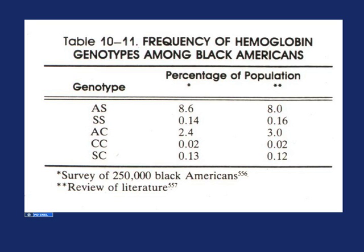The sickle cell allele is extremely common in Africa. In Americans of African descent, about 8% of the population are carriers of sickle cell anemia. That means about 4% of all hemoglobin beta alleles in this population are sickle and 96% are normal. Since you have two alleles, about 8% end up being carriers. Well, if 4% of alleles have this, the chance of getting two of those alleles is 4% times 4%, or roughly 0.16%, which should have sickle cell anemia — and that's exactly what's observed. This is Hardy-Weinberg equilibrium.